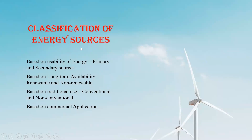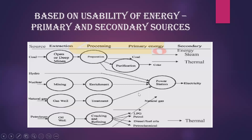Based on the classification of energy, it is divided into different types. Based on usability, it is divided as primary and secondary sources. Based on availability — whether short-term or long-term — it is divided as renewable and non-renewable. Based on use — whether commercial or traditional — it is classified as conventional and non-conventional, which also describes commercial application.